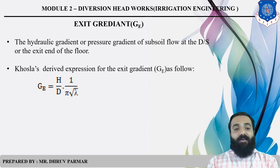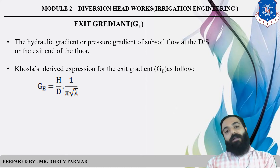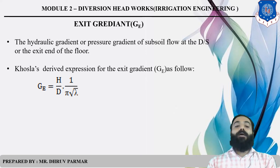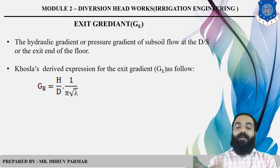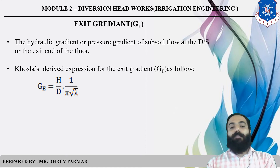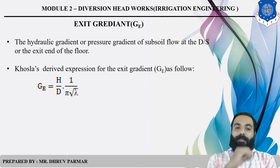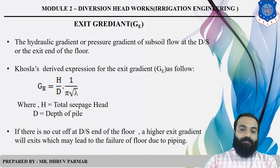To find lambda for exit gradient, use the same method as before: λ = (1 + √(1 + α²)) / 2. But use alpha from the downstream side, at the exit point, where α = b/d. Please remember this formula — it is very important to find the exit gradient.